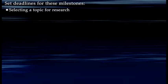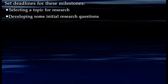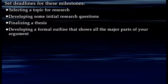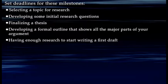A deadline by which you will have selected a topic about which to do your research. A deadline for developing some initial research questions. A deadline for finalizing the thesis — often what happens when you're writing an essay, you'll start out with an idea for a thesis, but as you do a little bit of research, you'll refine or reformulate that thesis. So set a deadline for having a final thesis. And then a deadline for a formal outline that shows all the major parts of your argument — it's always a good idea to have someone else review that.